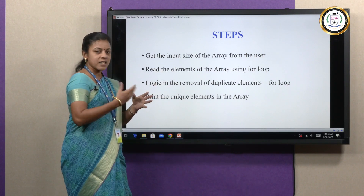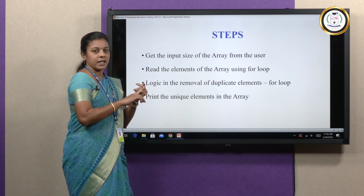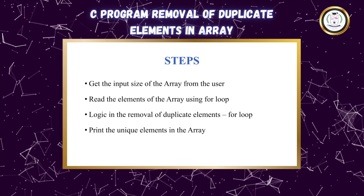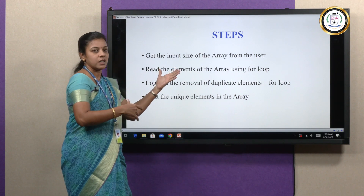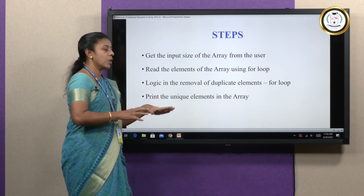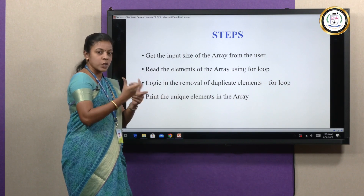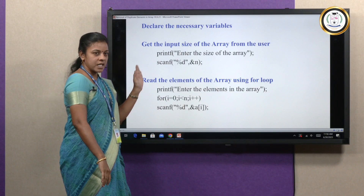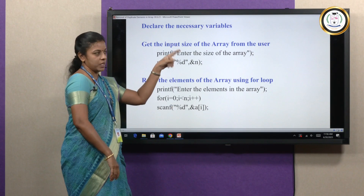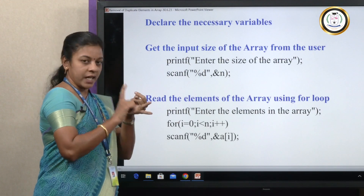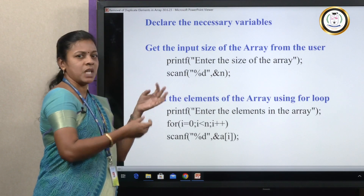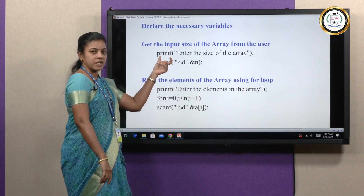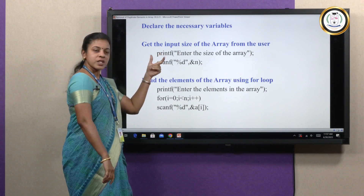These are the steps when writing a C program: first, declare the header file, then variables. Then get the size of the array from the user, and read the array elements from the user. Finally, perform the removal process of duplicate elements using a for loop, then print the unique elements. For reading elements, we use a for loop: for i equal to 0, i less than n, i plus plus.